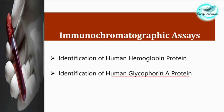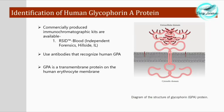Let's discuss the identification of human glycophorin A protein through the immunochromatographic assay. Like the human hemoglobin protein, immunochromatographic kits are available for glycophorin A — provided by Reced Blood Independent Forensics, the manufacturing company. These kits use antibodies that recognize human GPA, or glycophorin A protein, to identify human blood.